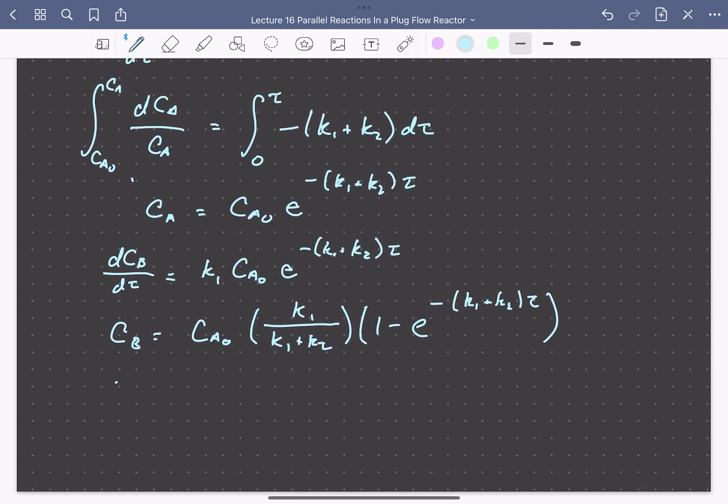For C, everything looks the same except we have a different rate constant in the numerator. The concentration of C depends on K2 divided by the sum of the rate constants rather than K1, and the rest of the expression is identical.